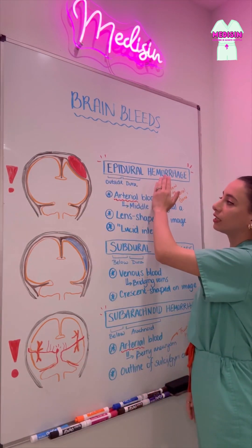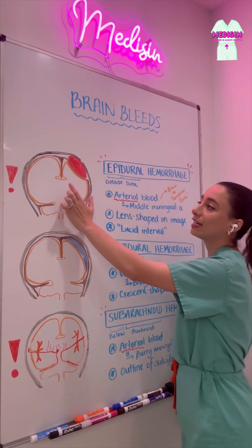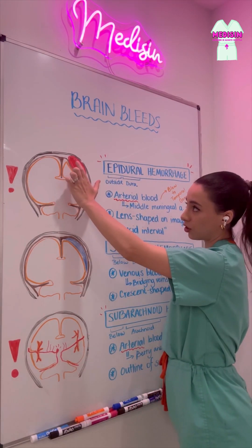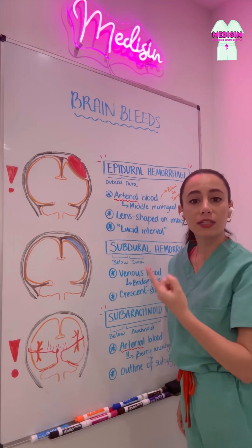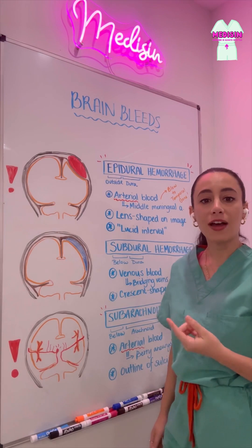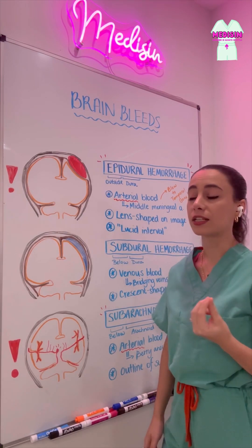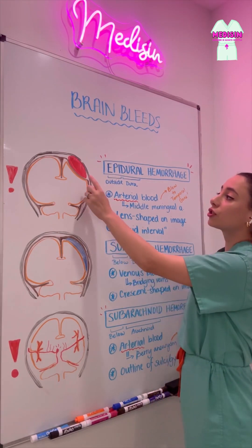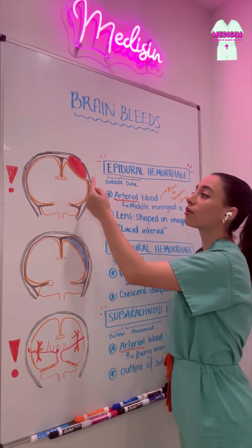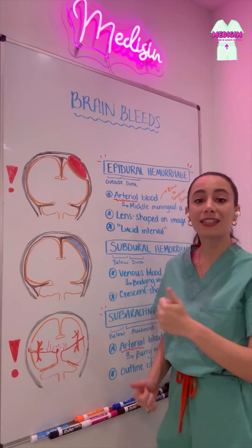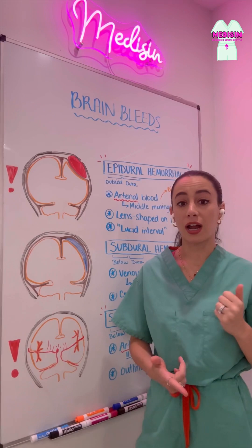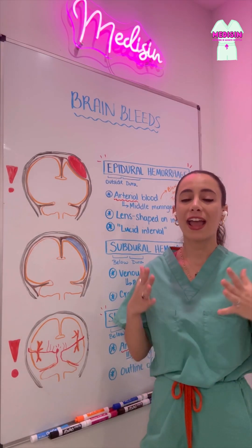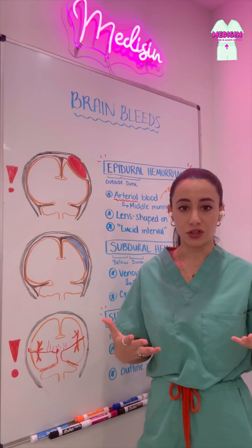In an epidural bleed, we have bleeding outside of this dura. And outside of the dura, we have a lot of arteries. So an epidural bleed is an arterial bleed. That means it's high pressure, high flow, and very dangerous.